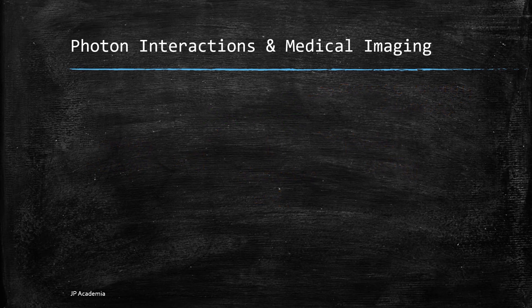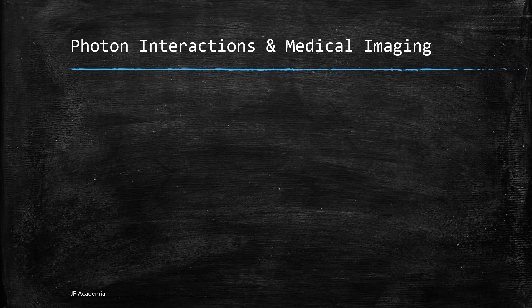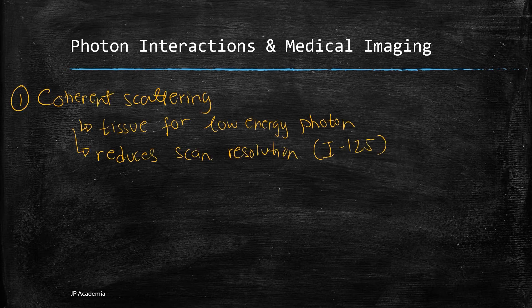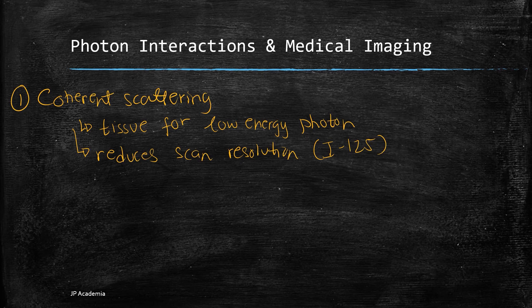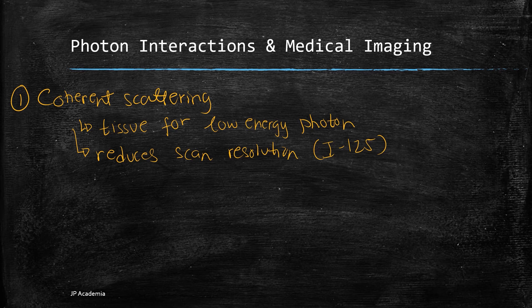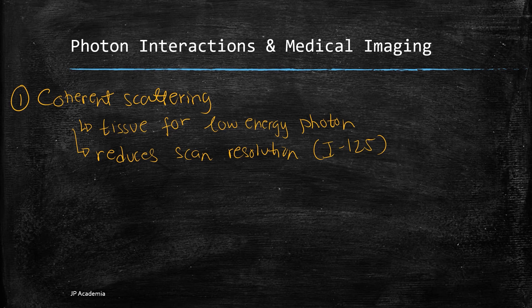Now, let us have a brief discussion of photon interactions and its role in medical imaging. First, coherent or Rayleigh scattering. This is where a photon is deflected or scattered with negligible loss of energy. This is important in tissue for low energy photons. And it usually reduces the resolution for nuclear imaging scans due to low energy gammas.